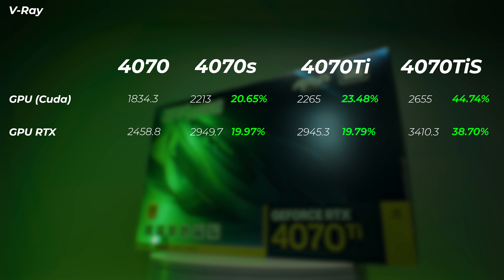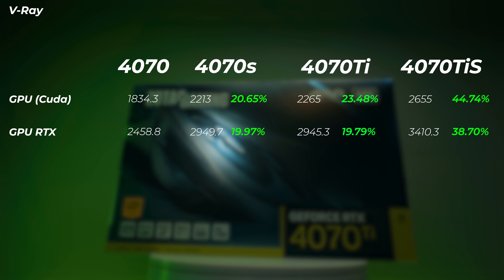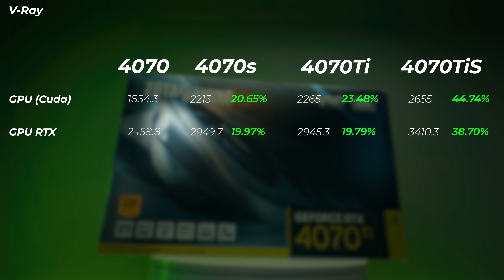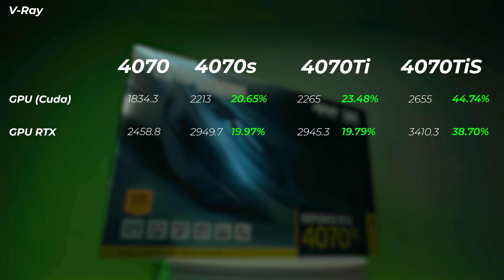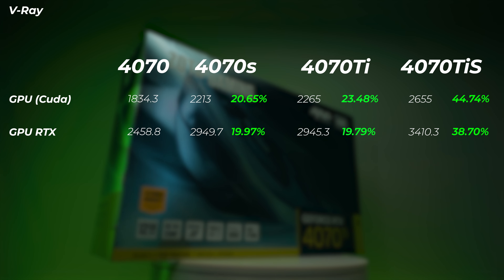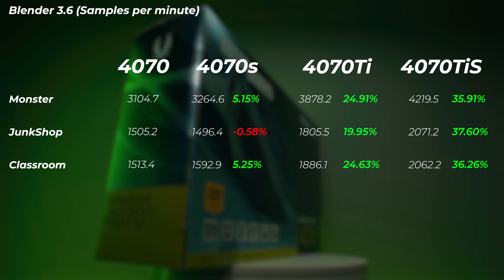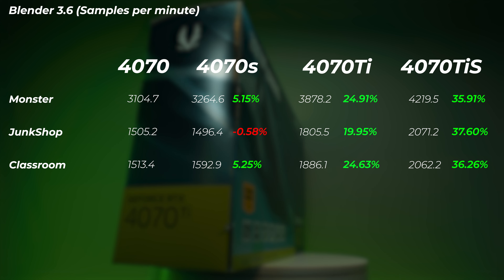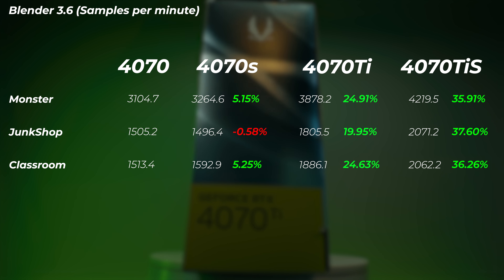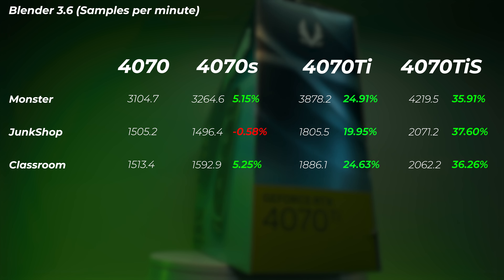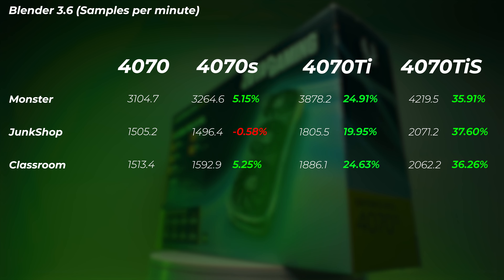Moving to 3D, this is where things start to diverge significantly. In V-Ray, the 4070 Super is 19–20% faster than the 4070 — quite a big jump. The Ti compared to the Super is only a few percent faster (about 3% max), so the Ti is probably not worth it, especially since it's discontinued. Don't pay Ti Super prices for a Ti — the 4070 Super is likely a better value.